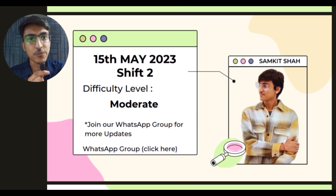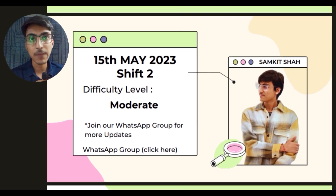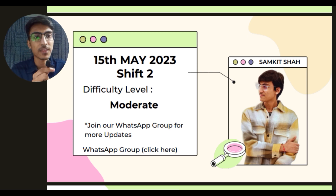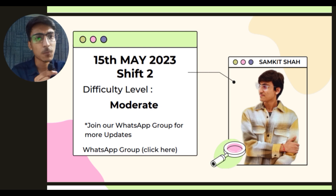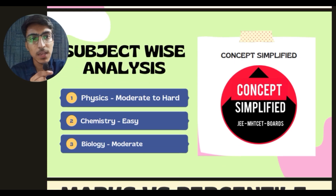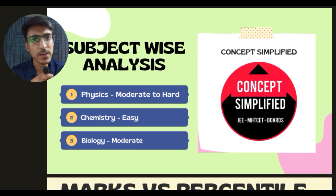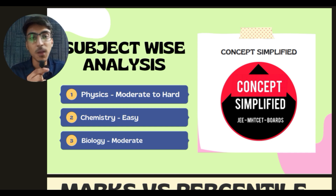15th May Shift 2 ka difficulty level exactly moderate tha. Pehli shift easy to moderate thi, is mein thoda difficulty level badha diya gaya. Students ne bataya ki biology jo aya tha woh thoda moderate level ka tha - biology ke kuch questions aise the jo unhe malum nahi tha kahan se puchhe gaye.